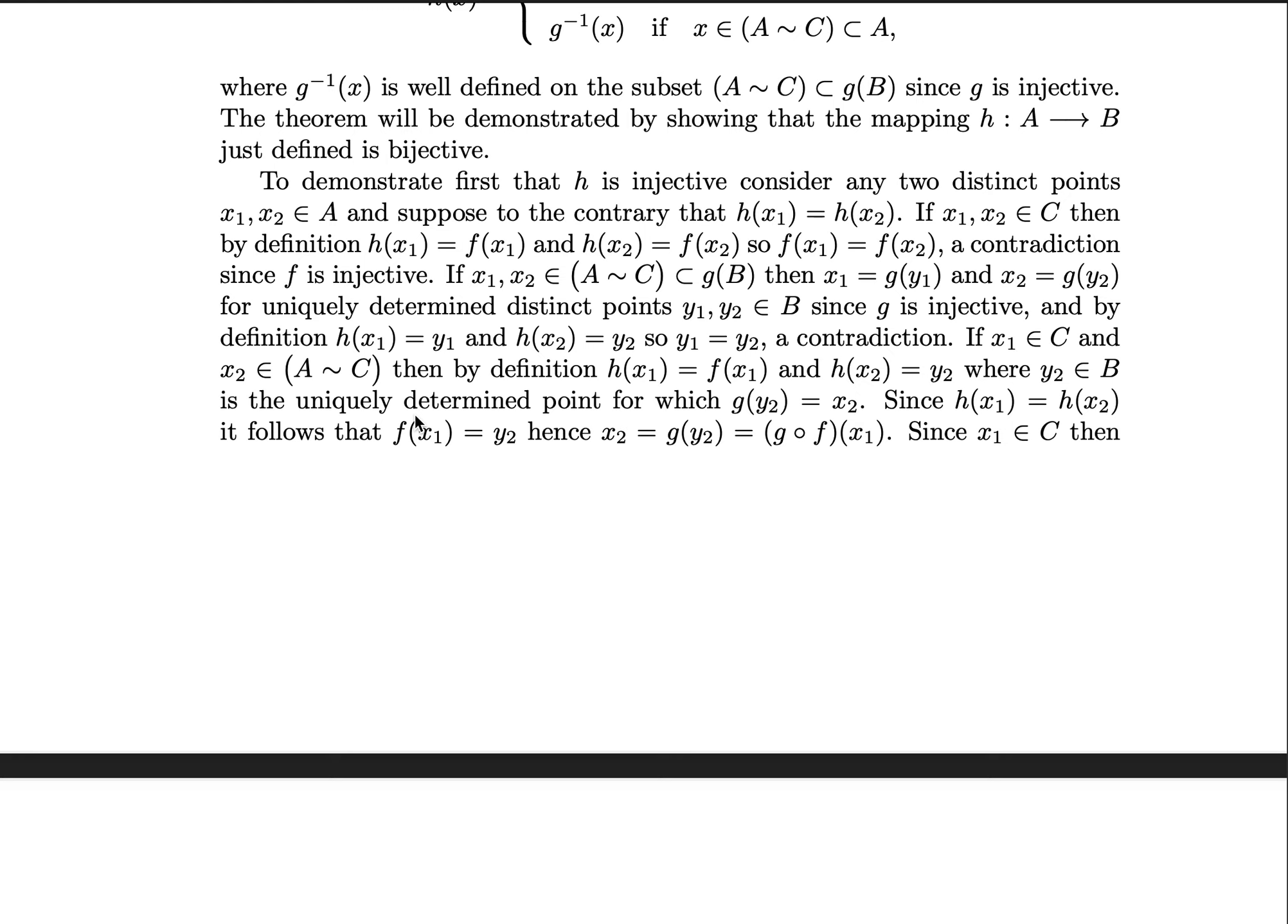But by definition, we know that h(x₁) is equal to y₁ and h(x₂) is equal to y₂. So y₁ is equal to y₂, which is a contradiction again. Now let's consider the third case, which is if one of them is in C and one of them is not in C, but still in A. Then you have h(x₁) is equal to f(x₁).